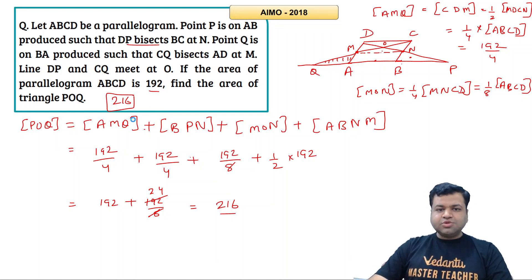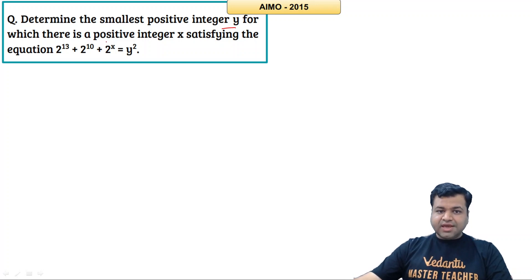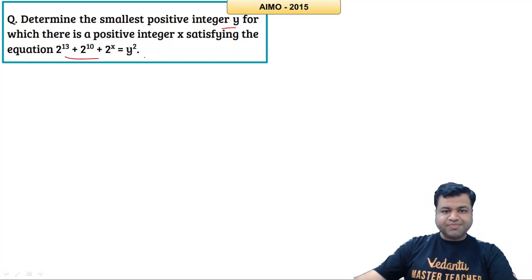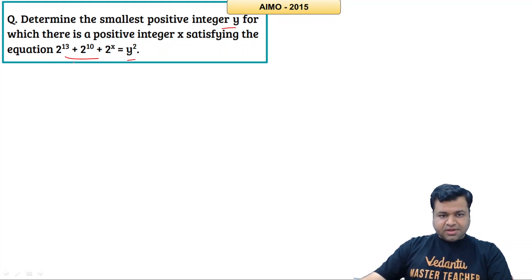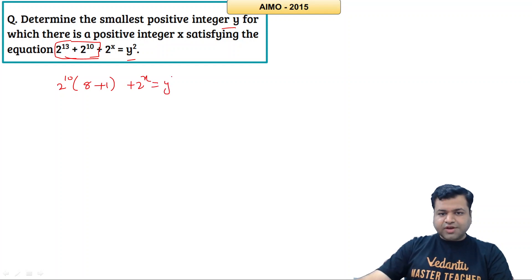Let's proceed to the next question. Determine the smallest positive integer y for which a positive integer x satisfies 2^10 + 2^13 + 2^x = y². Let's consider the first two terms and simplify. Taking 2^10 common, we get 2^10·(8 + 1) + 2^x = y². That is 2^10·9 + 2^x = y².